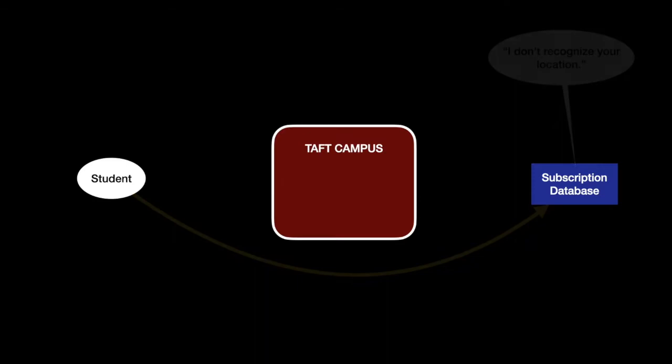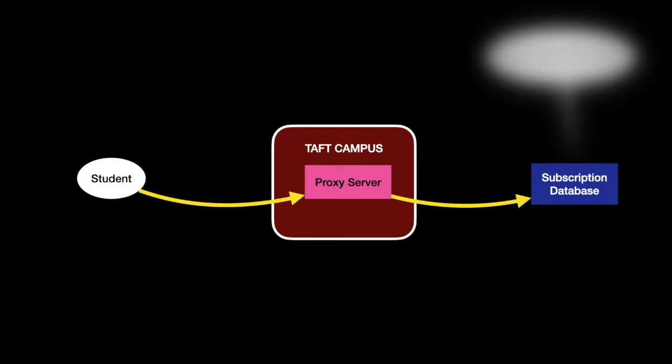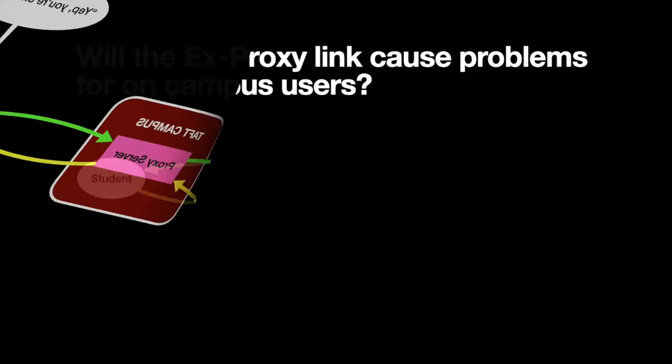This is where EZproxy comes in. The student accesses the proxy server link, which then passes the request on to the database. The database looks back, just sees the proxy server on campus, says, 'Yep, you're on the list,' and passes information back to the proxy server and back to the student. Pretty neat, right?